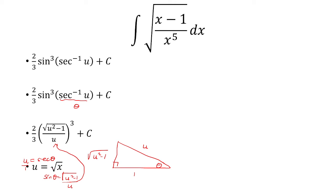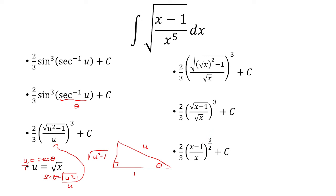But first, actually, we did make a substitution where u was equal to the square root of x. So I plug that in here for u. The square root of x squared becomes x. And so we have the square root of x minus 1 over the square root of x. And here you can just factor out the square root. So we're left with 2 thirds times x minus 1 over x raised to the 3 halves power plus c. That is our final answer.